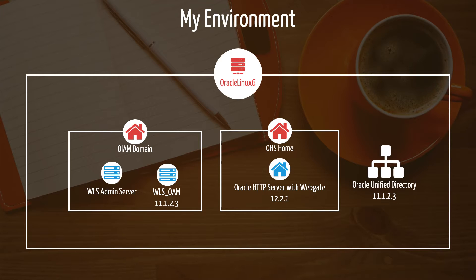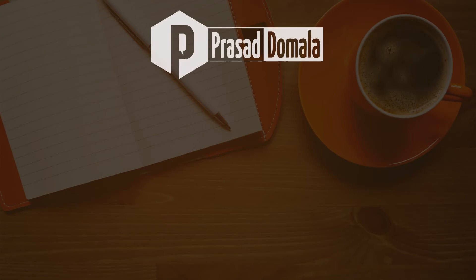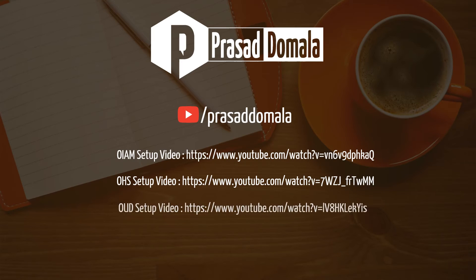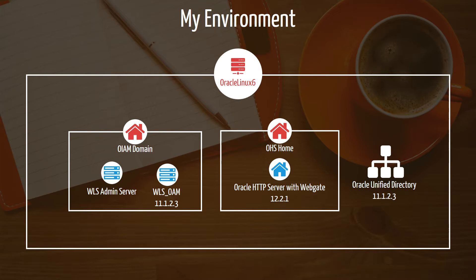We'll use Oracle Unified Directory as our primary user store for authentication and authorization. I have separate videos on how to install and configure Oracle Identity and Access Management, Oracle HTTP Server (OHS), and Oracle Unified Directory (OUD). Please have a look if you want to know how to set up this environment — links are in the description or click the information icon. All these components are on the same server, which is fine for demo purposes, but ideally in production you'll have them on separate physical machines. I have assigned 12GB of memory to my virtual machine, which should be sufficient to run the OIAM admin server, OIAM managed server, OHS, and OUD.